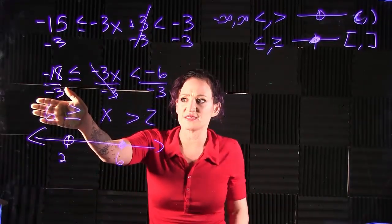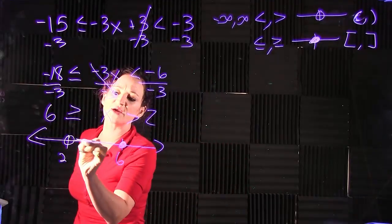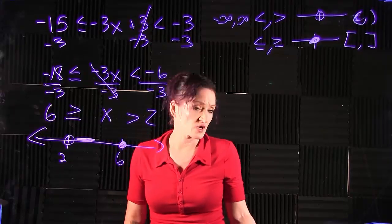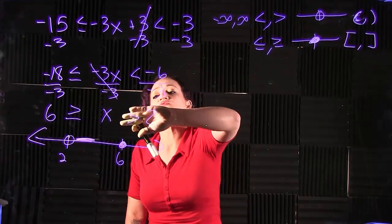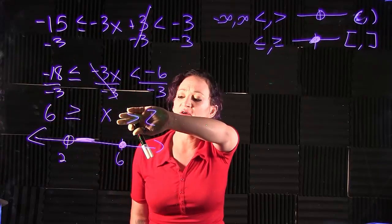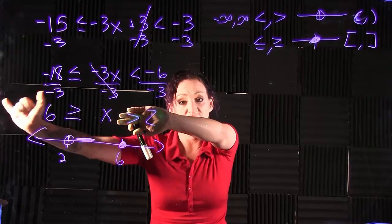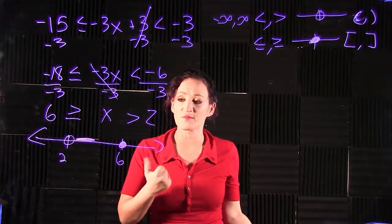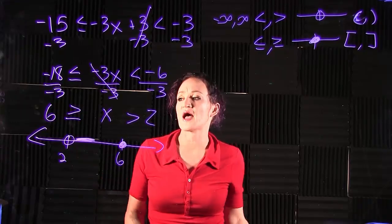If we cover up the left side of this, this says x needs to be greater than 2. Now if x needs to be greater than 2, that tells us we're going to be shading this section over here. You can also read inequalities from right to left, which means x is less than or equal to 6. Just make sure that you are being careful when you do that.